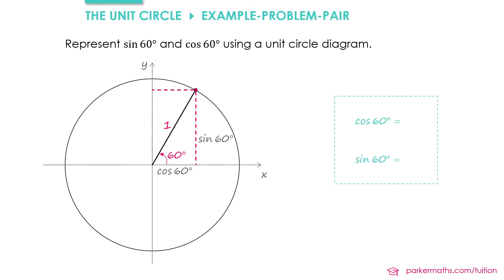We know the exact values of these two. Cos 60° is 1/2. Sin 60° is √3/2. And so the coordinates of the point on our circle are (1/2, √3/2).